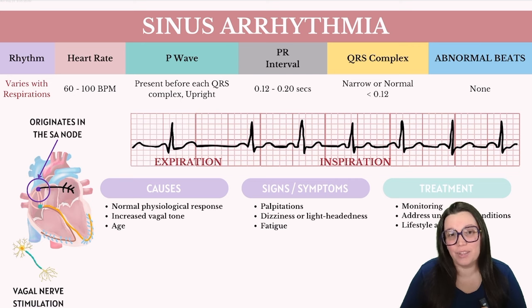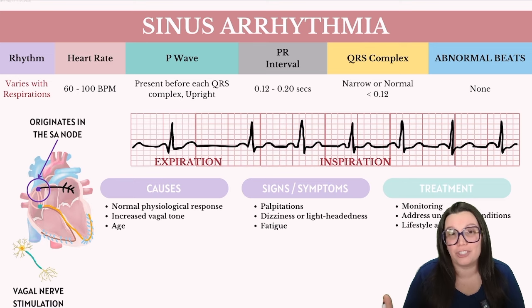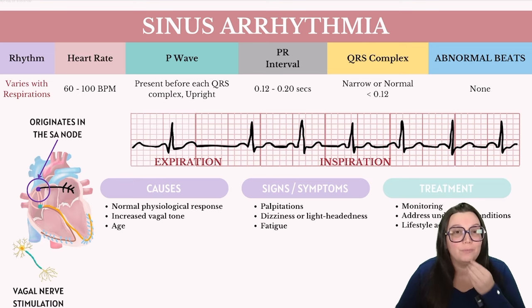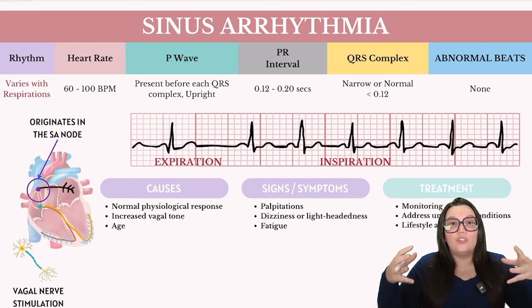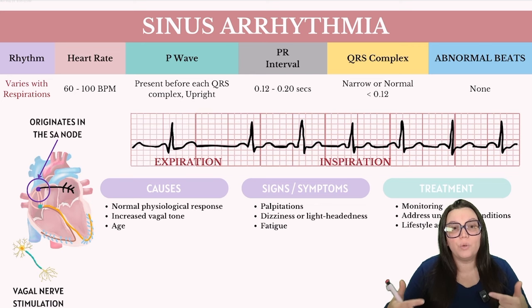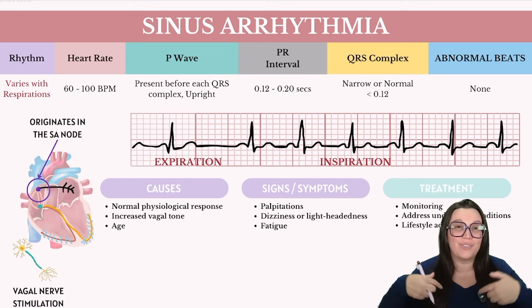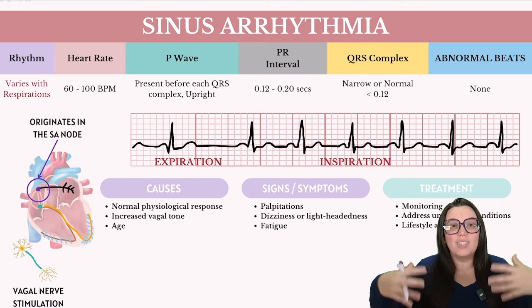Next up we have sinus arrhythmia, particularly respiratory sinus arrhythmia, which is a natural variation of the heart rate that occurs during the breathing cycle. This particular rhythm is more pronounced in children and most commonly seen in young healthy individuals and is generally considered normal, reflecting the heart's ability to adapt to changes in physiological demands. When the lungs inhale, the diaphragm contracts and pulls downward while the muscles between the ribs contract and pull upward, increasing the size of the thoracic cavity and decreasing the pressure inside.